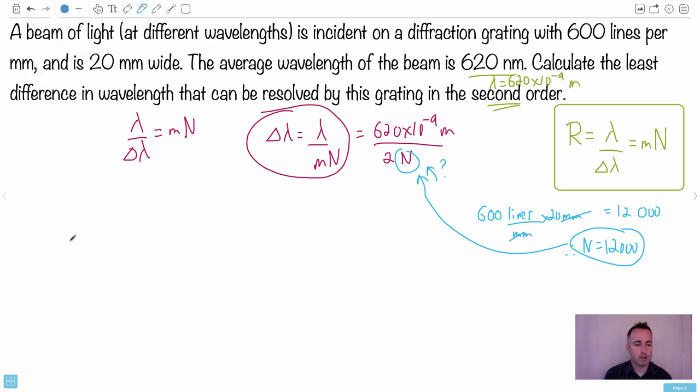So finally then, I can do the final answer here. So I have delta lambda (Δλ) - that's my smallest difference in wavelength. It's just going to be the 620 times 10 to the minus 9 meters divided by 2 times 12,000, which is 24,000. And there's no units on those, so that's why my answer will be in meters, which is good news. It's supposed to be.